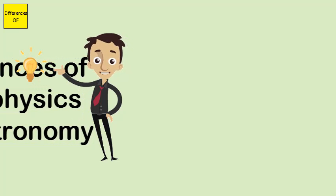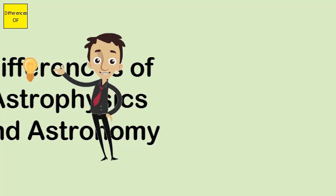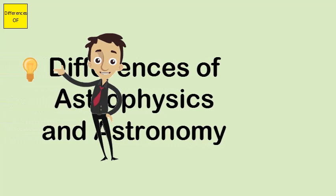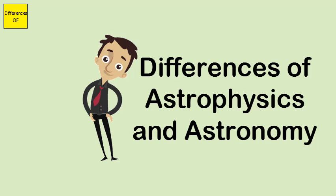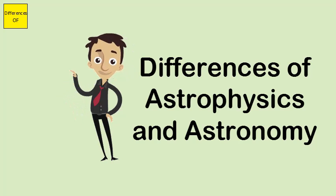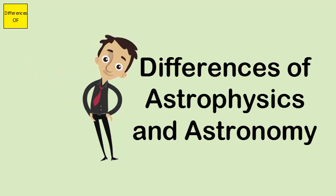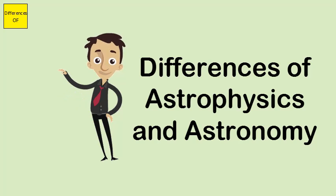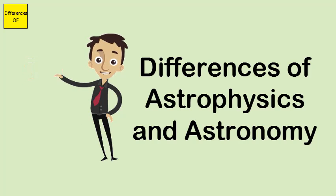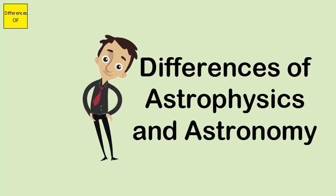The difference between astrophysics and astronomy: astronomy is the study of the whole scope of celestial bodies — their behavior, their origins, observations, and even simple star charts. Astrophysics only studies the physics of celestial objects and systems.